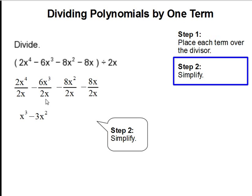6x to the third divided by 2x gets us 3x to the second power and don't forget to bring down the subtraction sign.